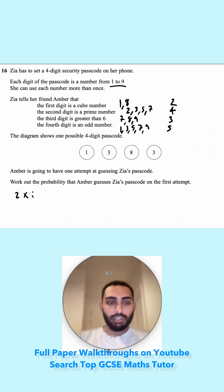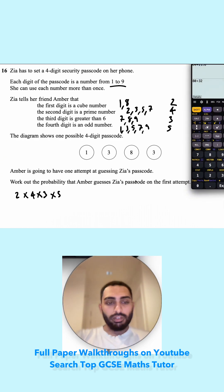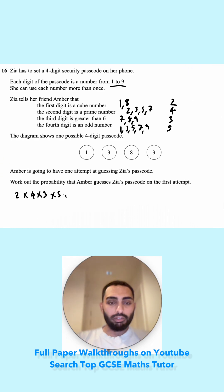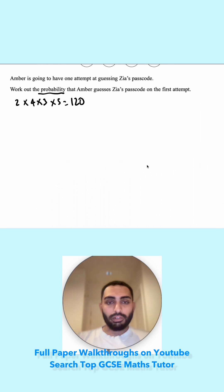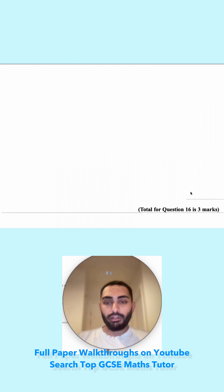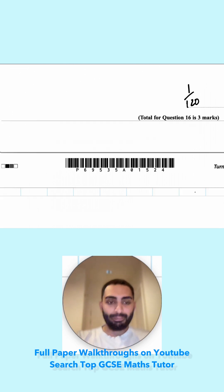So it's 2 multiplied by 4 times by 3 times by 5. So 8, 24, that would be 120. So altogether, there are 120 possible combinations, but we need the probability that she's going to guess it right the first time. So it's going to be 1 over 120.